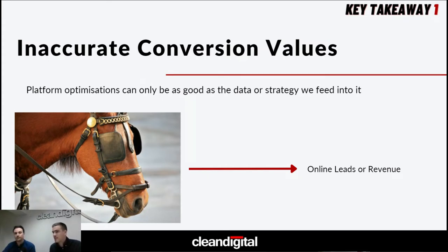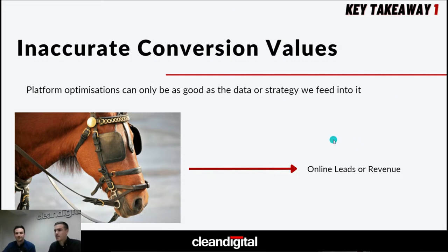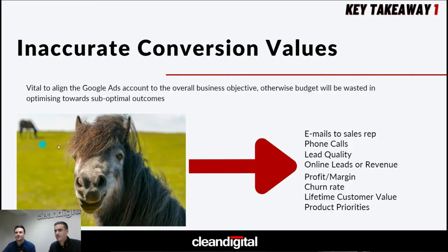Usually we see it's things like online leads or revenue pulling through, and that can be great — they're very important metrics — but if your business is looking for something else, we need to be passing that information back through to Google Ads, whether in bidding strategies or just the data we're pulling through, so we can optimize automatically or manually. That's the horse with its blinkers on, just looking at online leads and revenue. Ideally you want to pull anything relevant to your business back through.